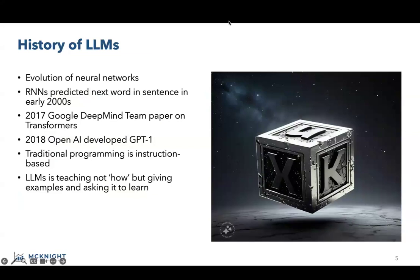Where did LLMs come from? It's an evolution of neural networks — a machine learning model inspired by the human brain. RNNs predicted the next word in a sentence, which is fundamental to Gen AI, back in the early 2000s. What really kicked off the current momentum is the Google DeepMind team paper on Transformers in 2017, called 'Attention Is All You Need.' It's a great foundational piece on what got us to where we are today.